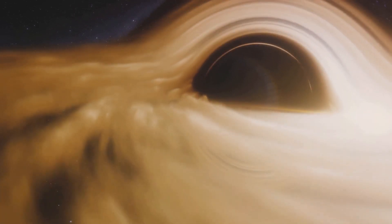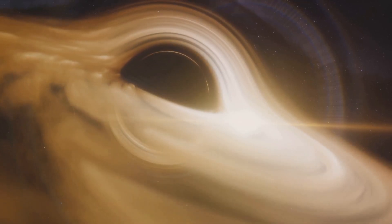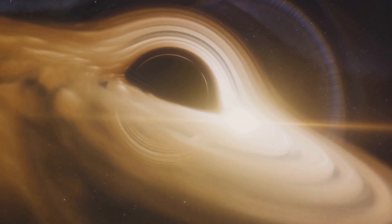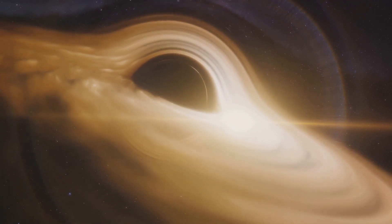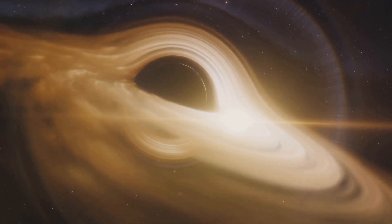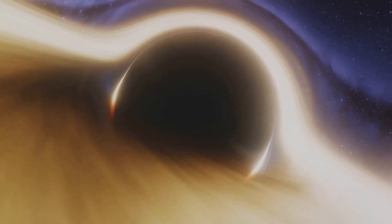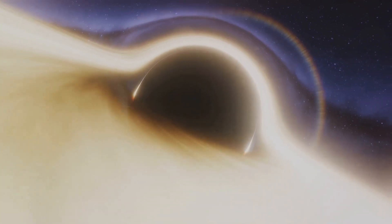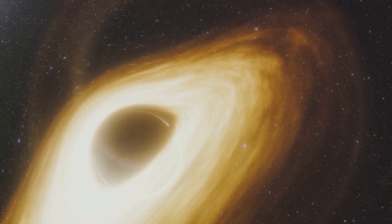The formation of Sagittarius A asterisk is a tale of cosmic proportions. It began as a dense region of gas and dust. Over time, the immense gravitational pull of this region caused it to collapse in on itself, forming a singularity, a point in space where gravity is so strong that not even light can escape its clutches. This singularity grew, feeding on the surrounding matter, and over billions of years evolved into the supermassive black hole we now know as Sagittarius A asterisk.